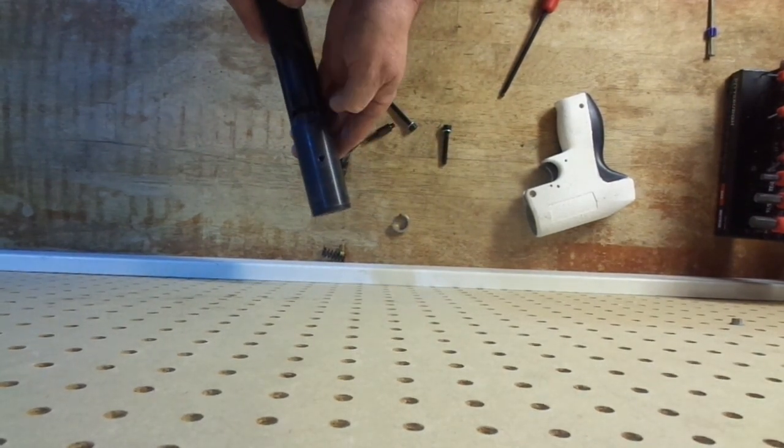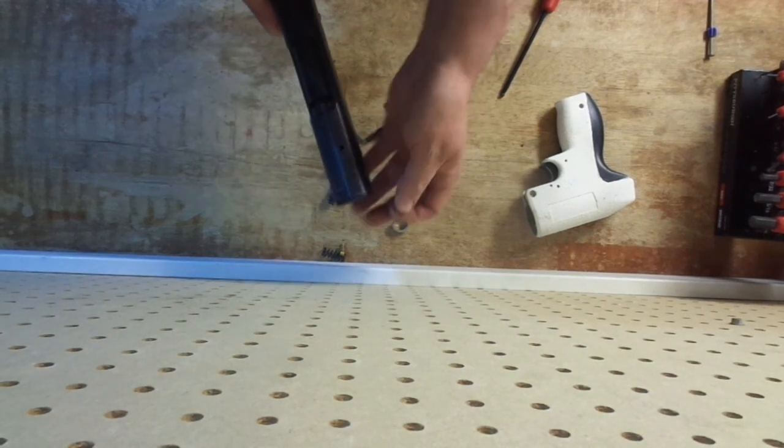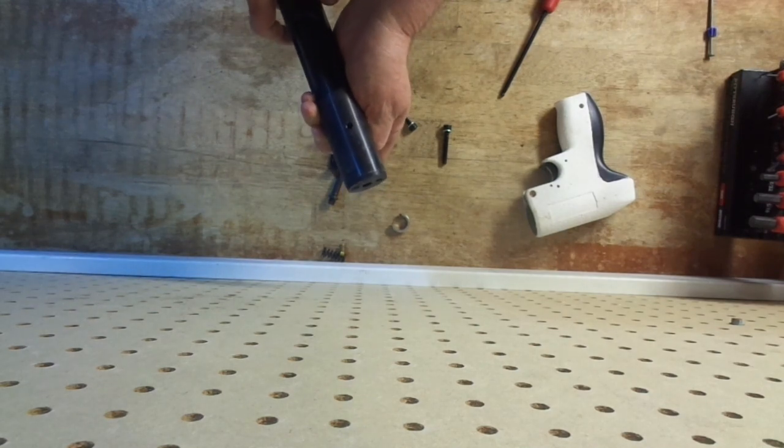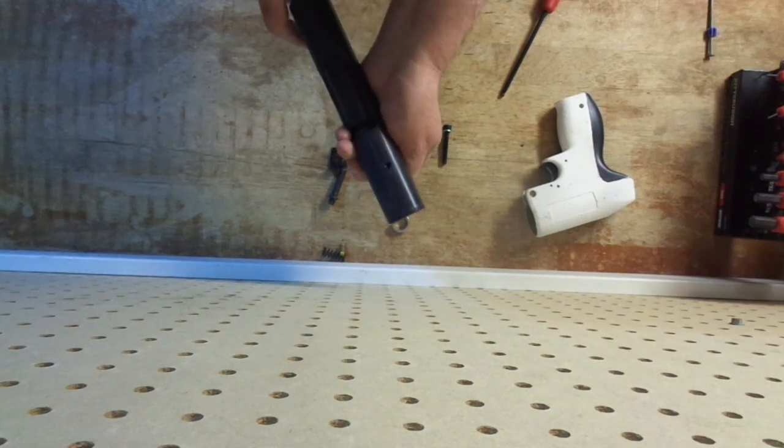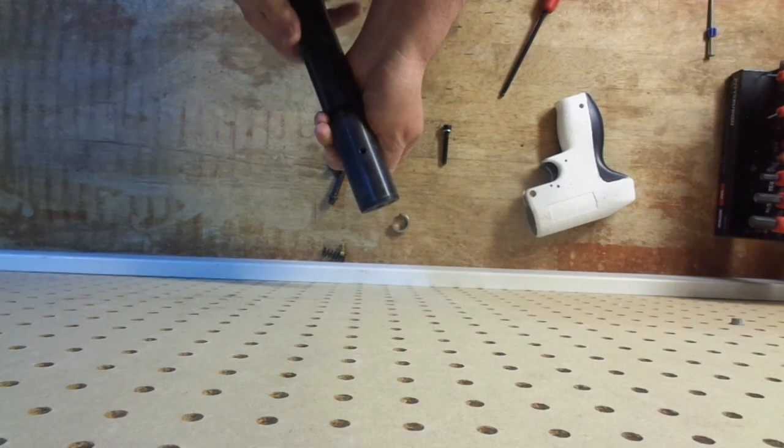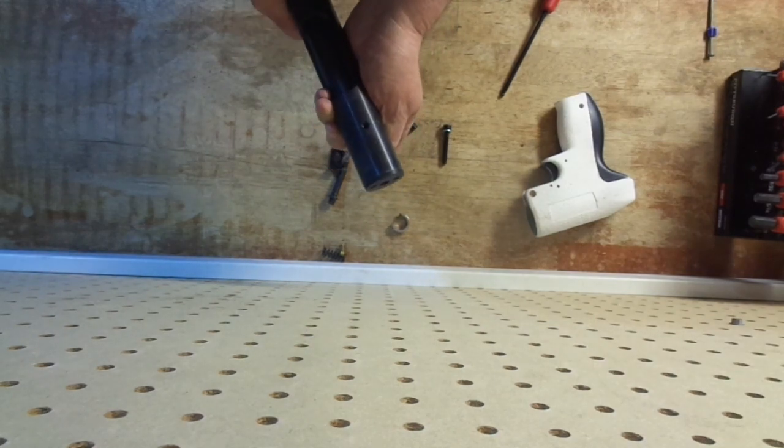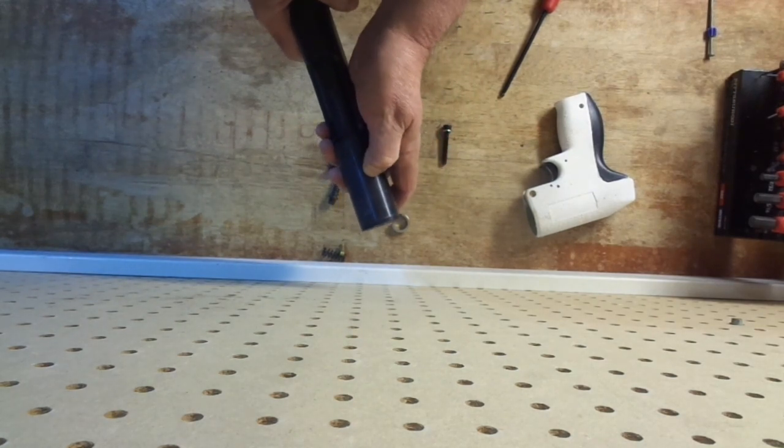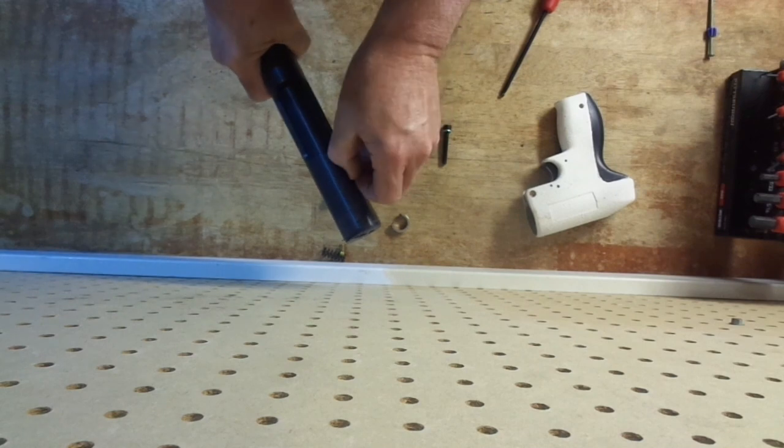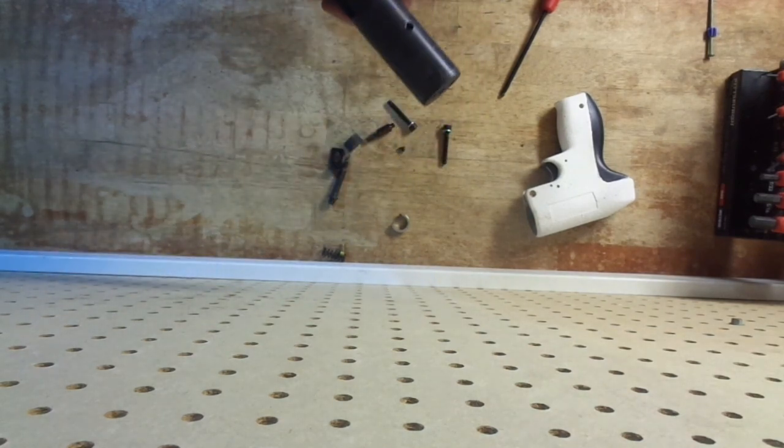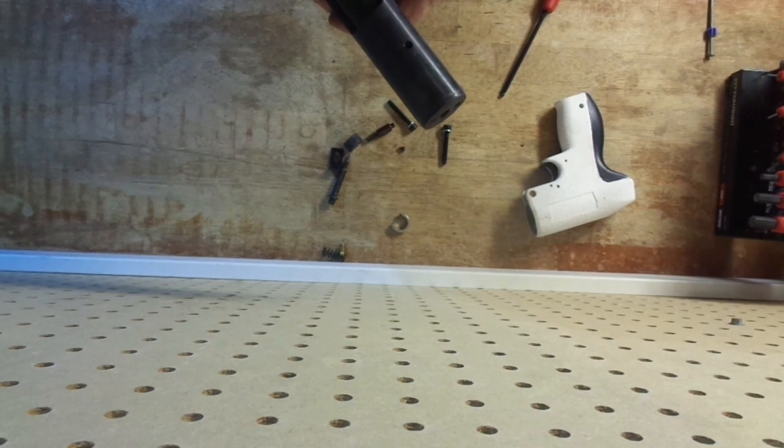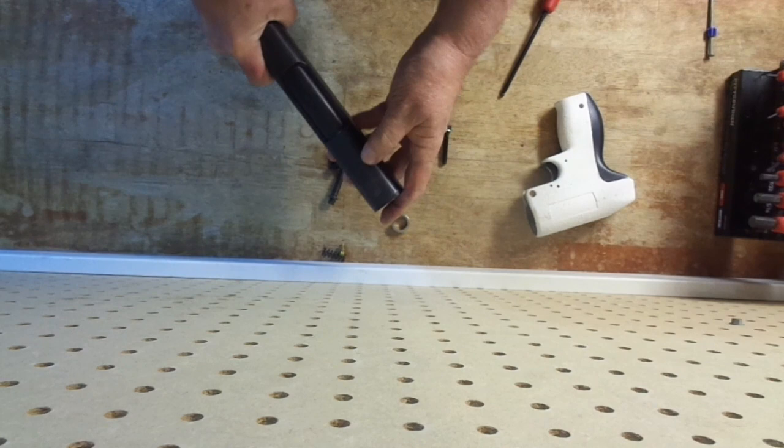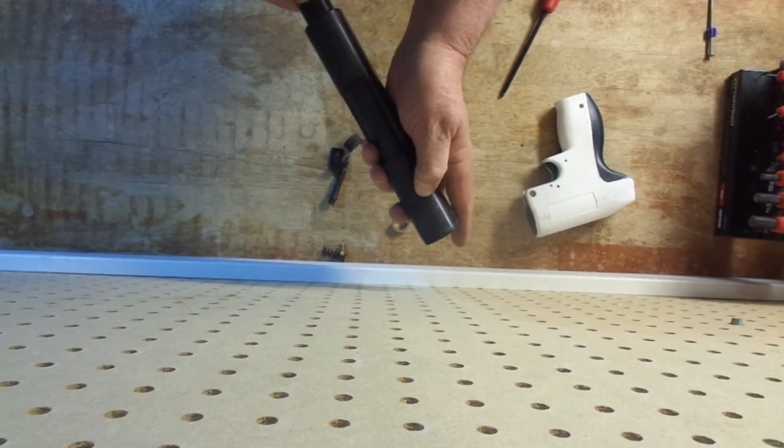Since this tool does not have an ejector, it uses a nib to eject the powder load. It's kind of hard to turn the barrel or line the neck by turning the barrel. Missed it again. There we go.